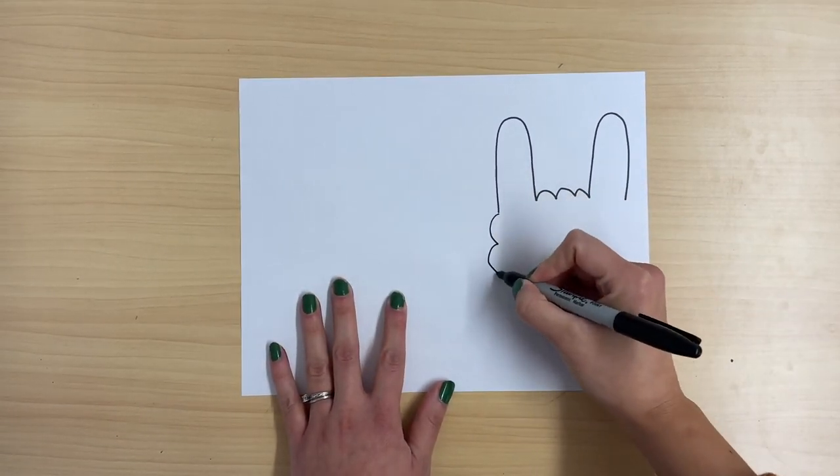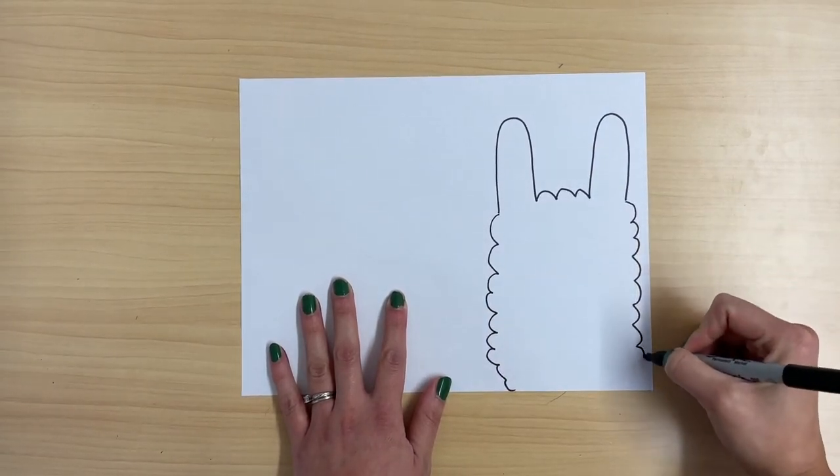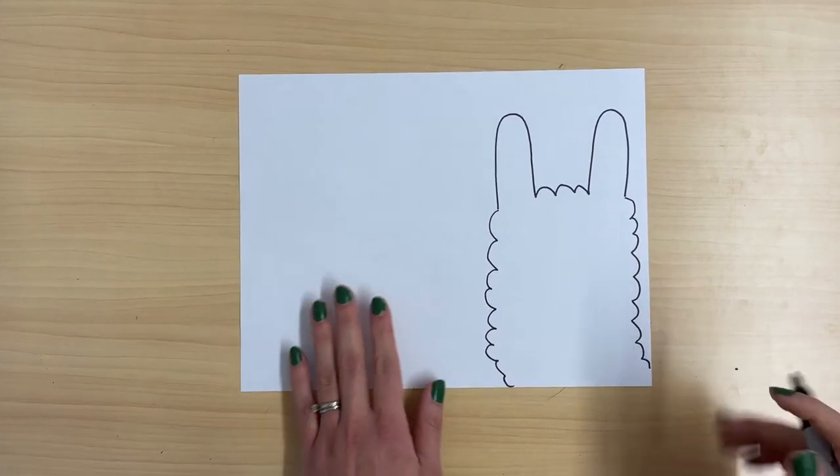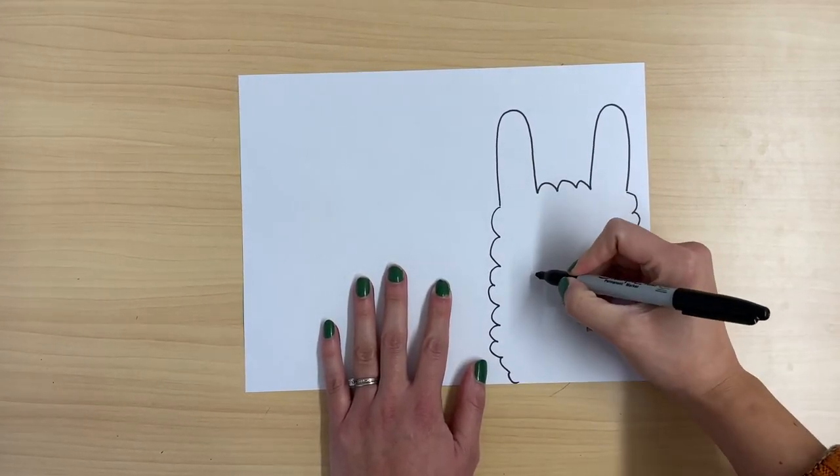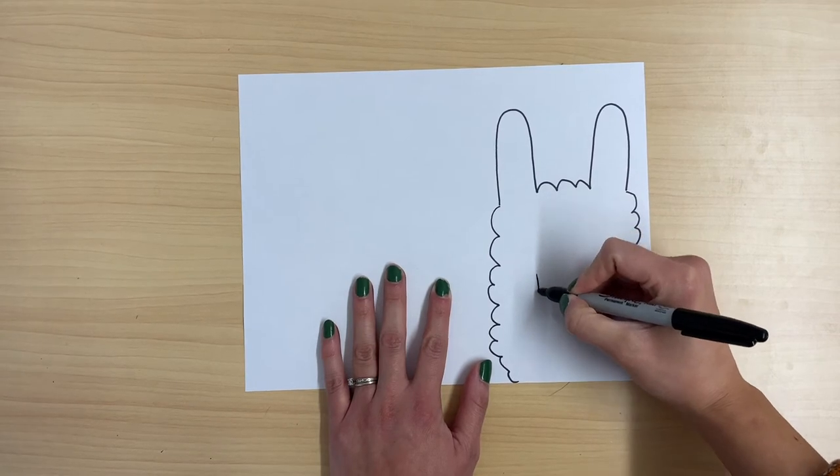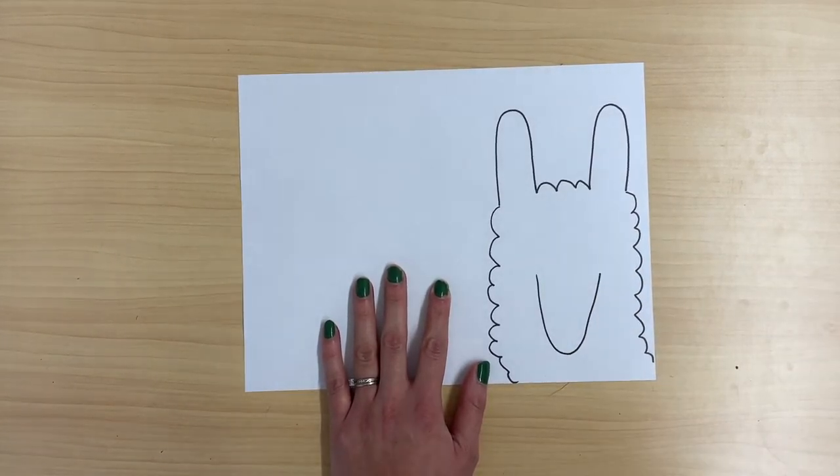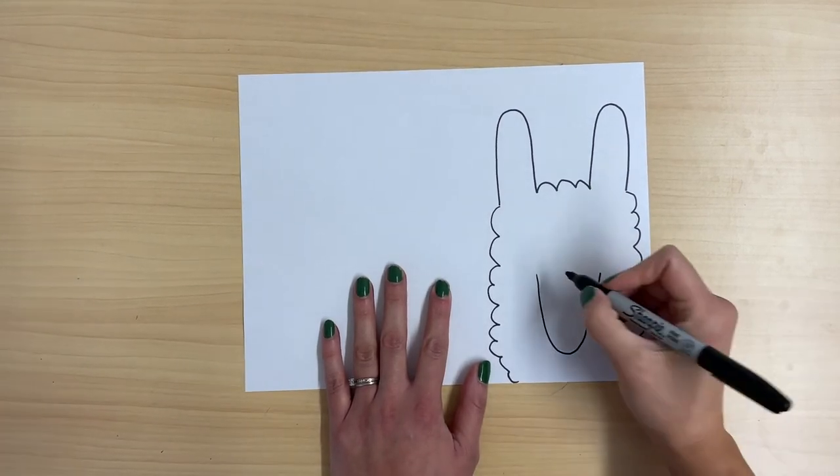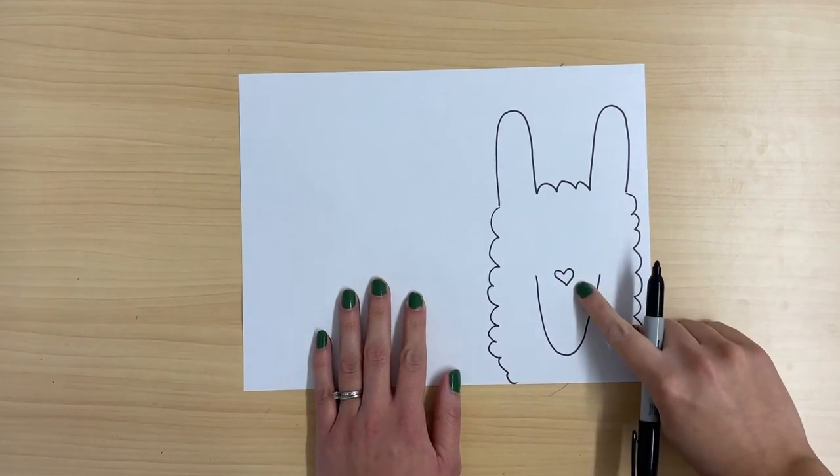Next, to make the llama's face, I'm going to draw a shape that's similar to the ears but upside down. I'm going to draw it kind of in the middle like this, and then I'm going to draw a little heart at the top like that. The heart is the llama's nose.